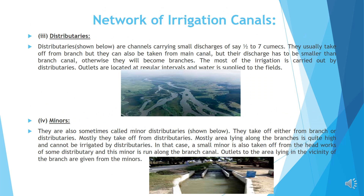Distributories are channels carrying small discharges of say half to seven cumecs. They usually take off from branch canals, but they can also be taken from the main canal. However, their discharge has to be smaller than that of a branch canal, otherwise they will become branches.